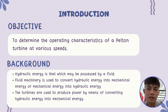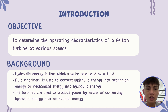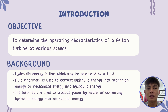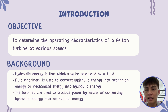The background is that hydraulic energy may be processed by a fluid. The fluid mechanical machine is used to convert hydraulic energy into mechanical energy, or change mechanical energy back into hydraulic energy. The turbine is used to produce power by means of converting hydraulic energy into mechanical energy.